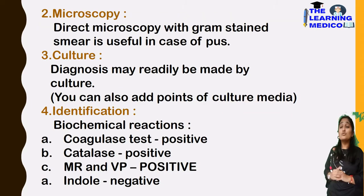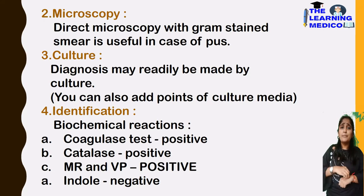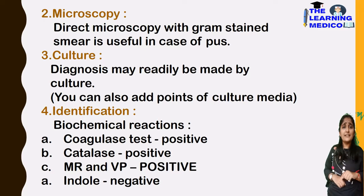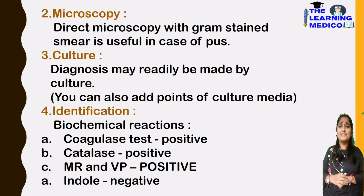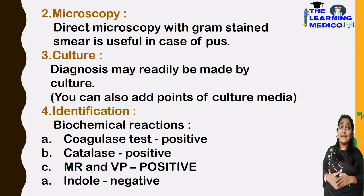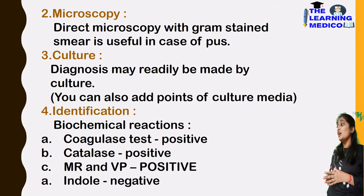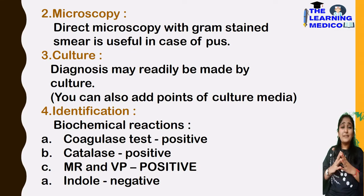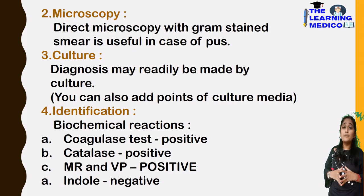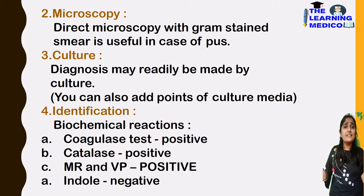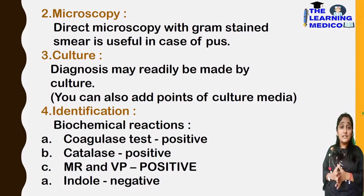Microscopy: under the microscope, we can see the bacteria — Staphylococcus arranged in grape-like clusters. However, in food poisoning cases, identification under the microscope is difficult because many different bacteria may be present.